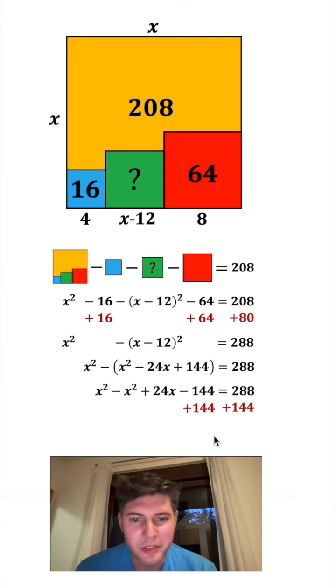So next, let's add 144 to both sides. After all this, all we have on the left side is just 24x. This x squared minus x squared went away, and this negative 144 plus 144 went away. And then 288 plus 144 is equal to 432. To solve for x, we divide both sides by 24. 24x divided by 24 is x, and 432 divided by 24 is equal to 18.